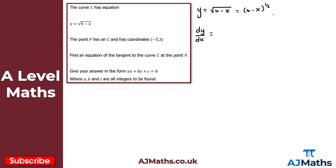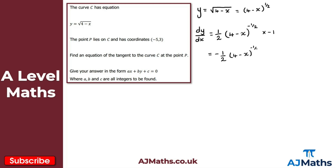Using the chain rule: take the power, multiply by the coefficient in front of the bracket. There's a 1 there, so 1 times a half gives a half. Multiply by the bracket, reducing the power by 1: that gives (4 − x) to the power of minus a half. We're not done — multiply by the derivative of the inside of the bracket with respect to x, which gives minus 1. So we get minus a half times (4 − x) to the power of minus a half.